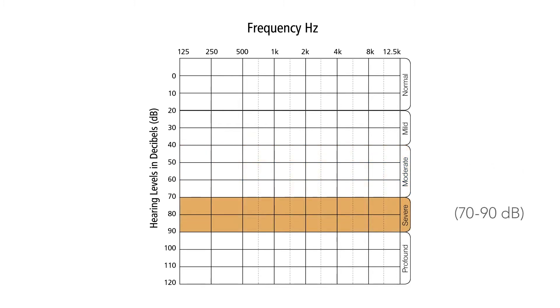At severe, the hearing levels will then be 70 to 90 decibels. If your hearing is at this level, it is very difficult to hear in most environments or gatherings, and you may find yourself seeking quieter environments to hear speech.